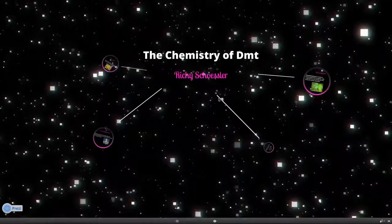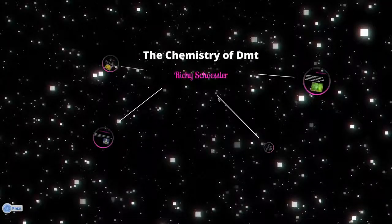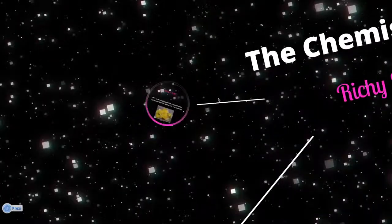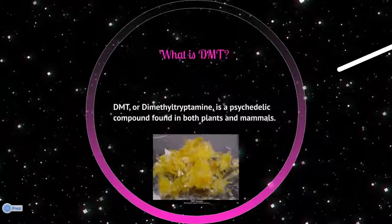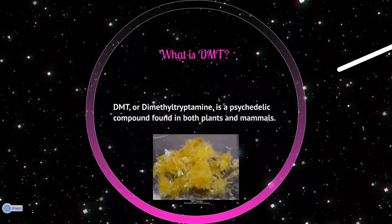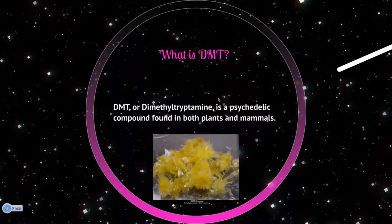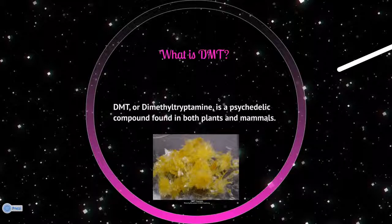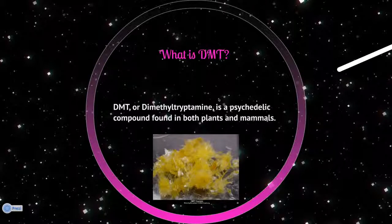The chemistry of DMT. What is DMT? DMT is a psychedelic compound found in both plants and mammals. It was first synthesized in 1931, but the discovery of DMT being a natural product was found in 1946.